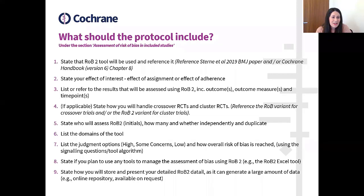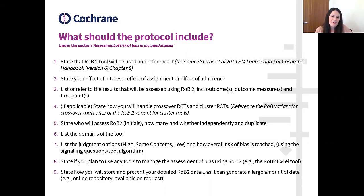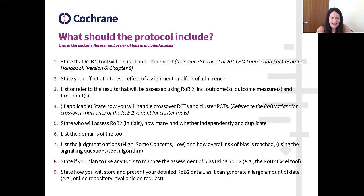As Rachel mentioned, you need to decide on the effect of interest, and this should be stated in the protocol — whether the authors are interested in effect of assignment or effect of adherence, and sometimes it can be both. You also want to list the results that you're actually going to assess using the Risk of Bias 2 tool, and I'll talk a little bit more about that later on.